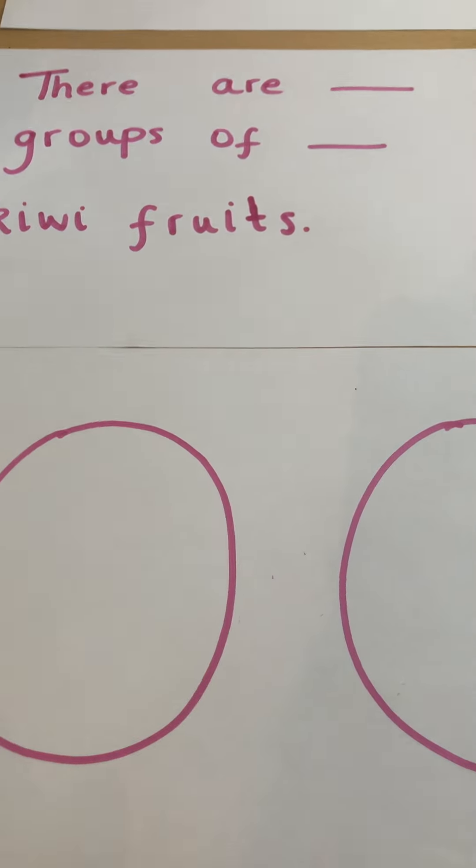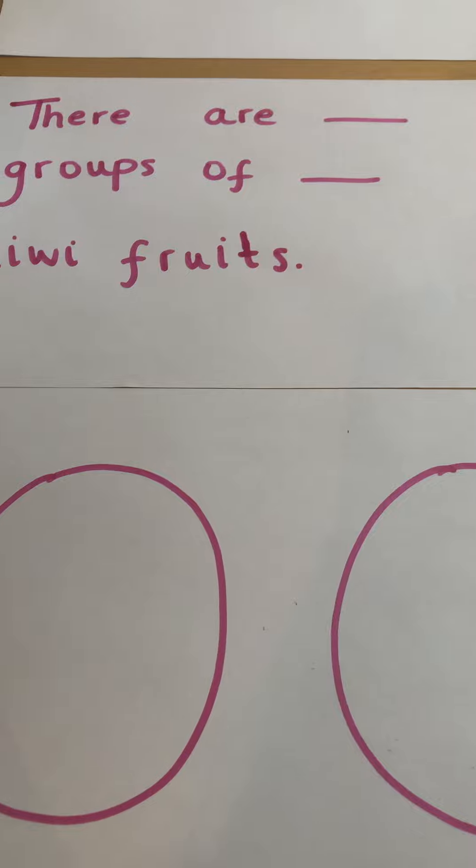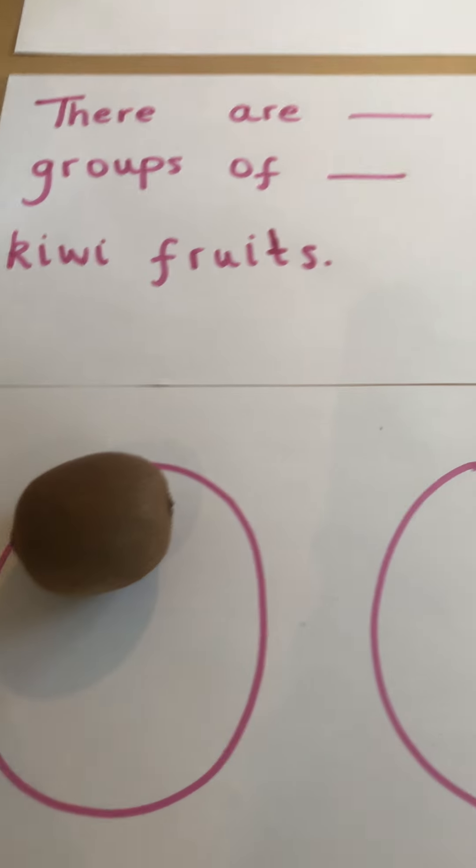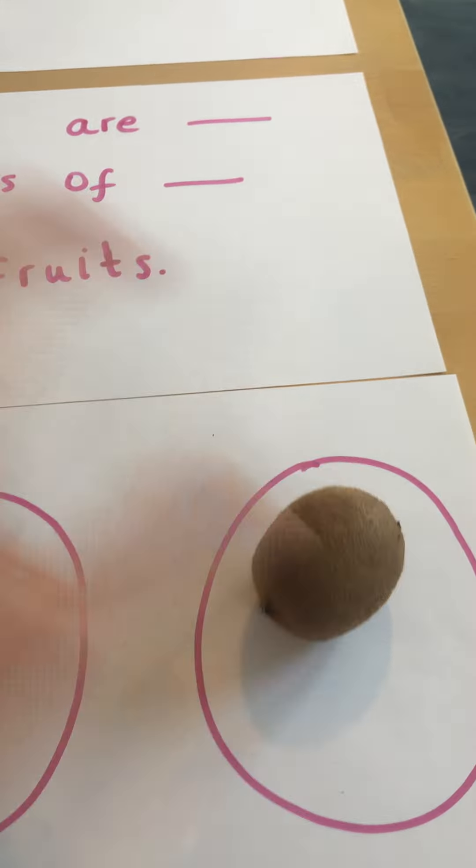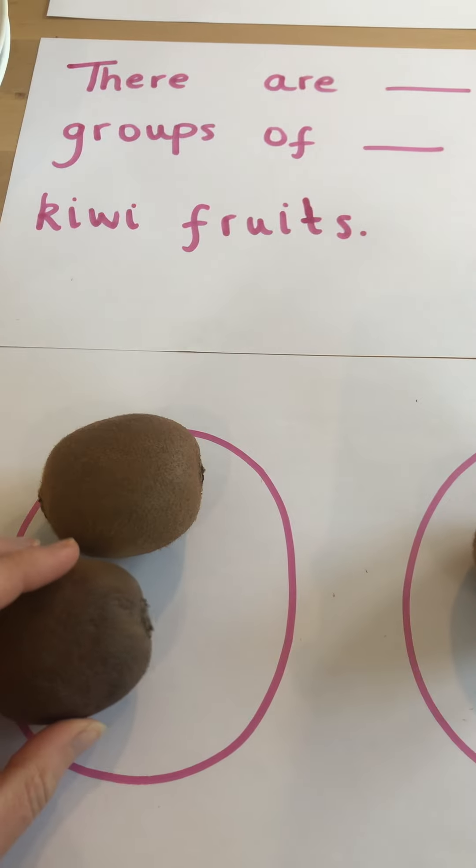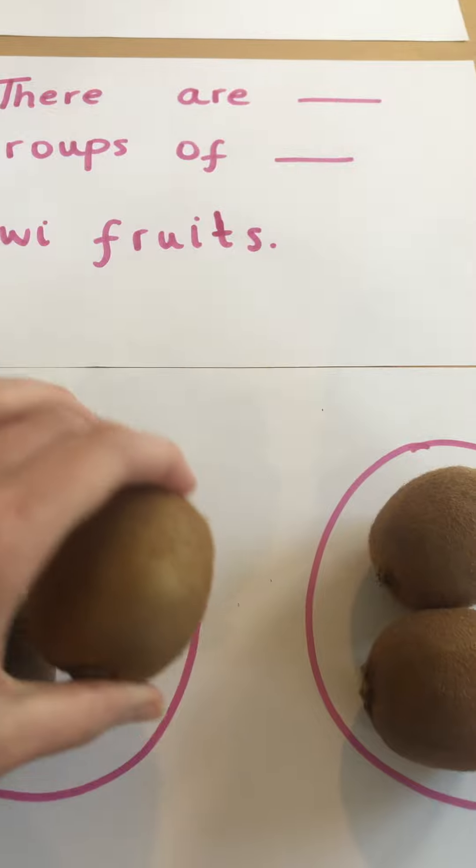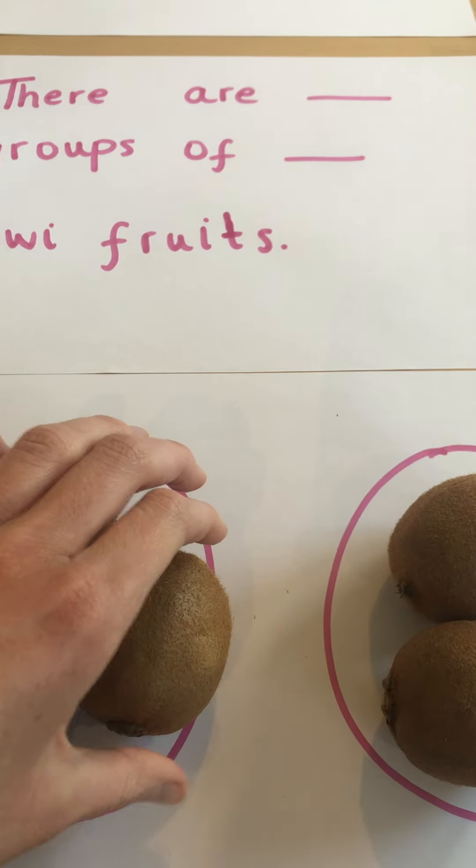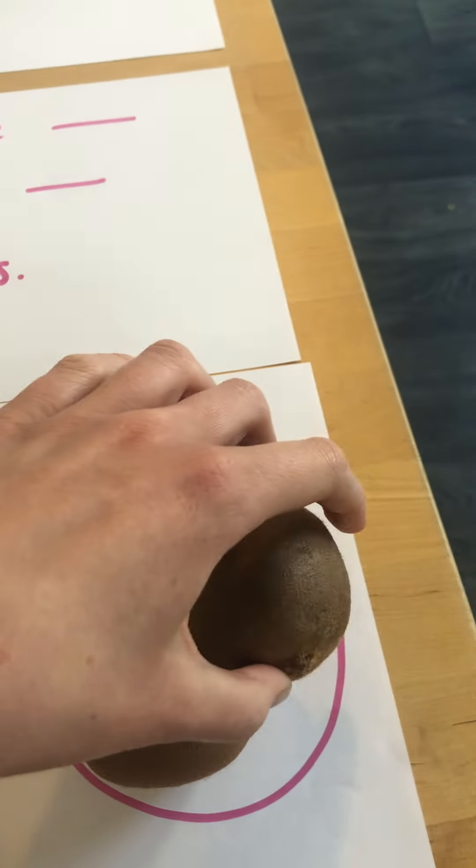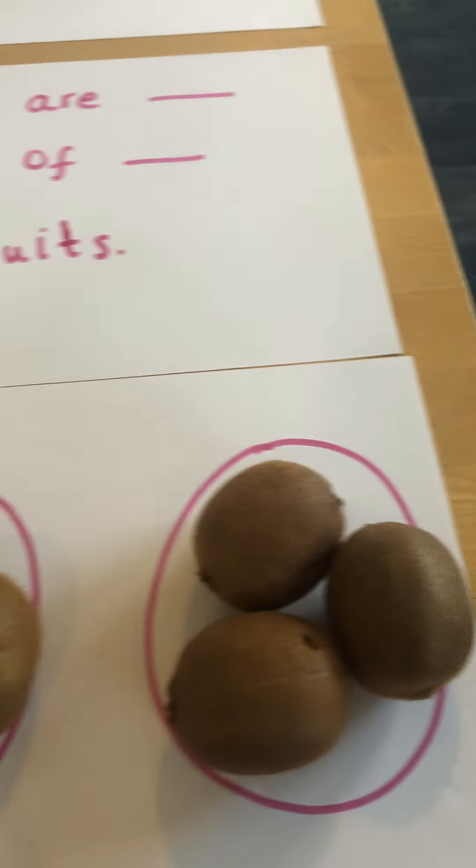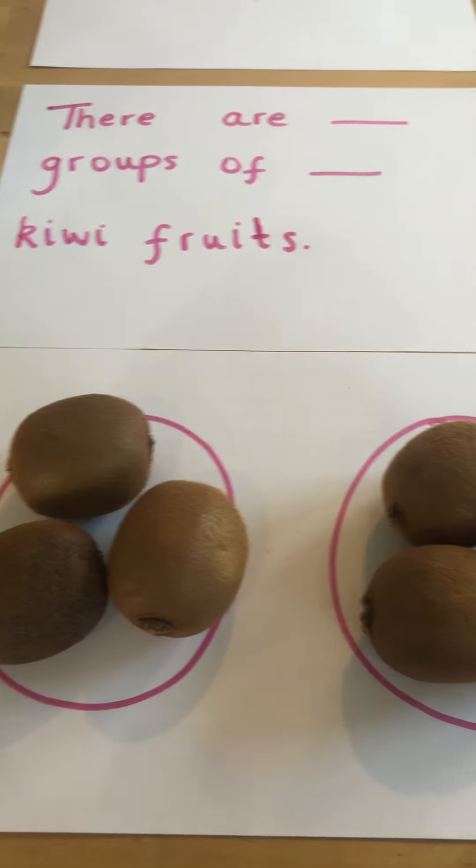To check that I've shared them all, should we just start together? You're going to help me count: one, two, three, four, five, don't roll away, six. There we go, so I've shared all of the kiwi fruits.